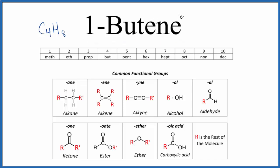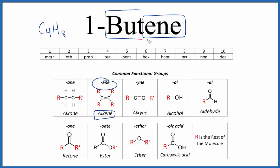Note that 1-butene ends in ENE. ENE means that we have an alkene, and we're going to have a double bond between carbons. The 'bute' tells us that we'll have four carbons. So we have four carbons with a double bond, and the '1' tells us where we're going to find the double bond in our 1-butene structural formula.